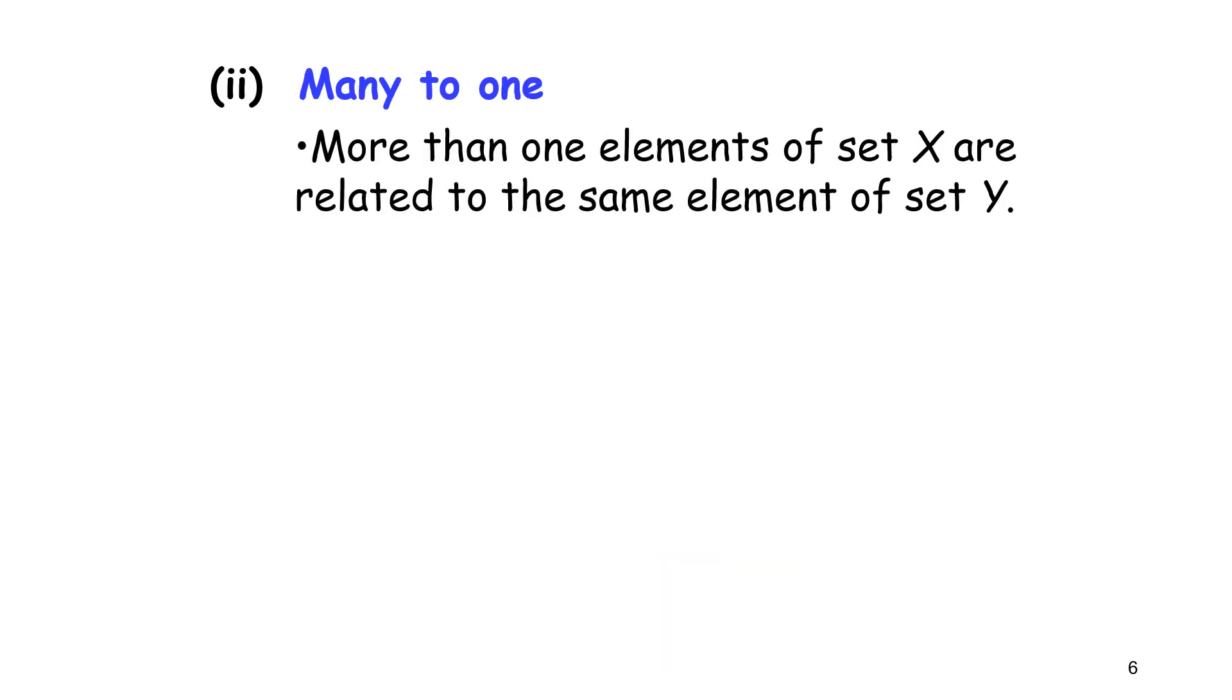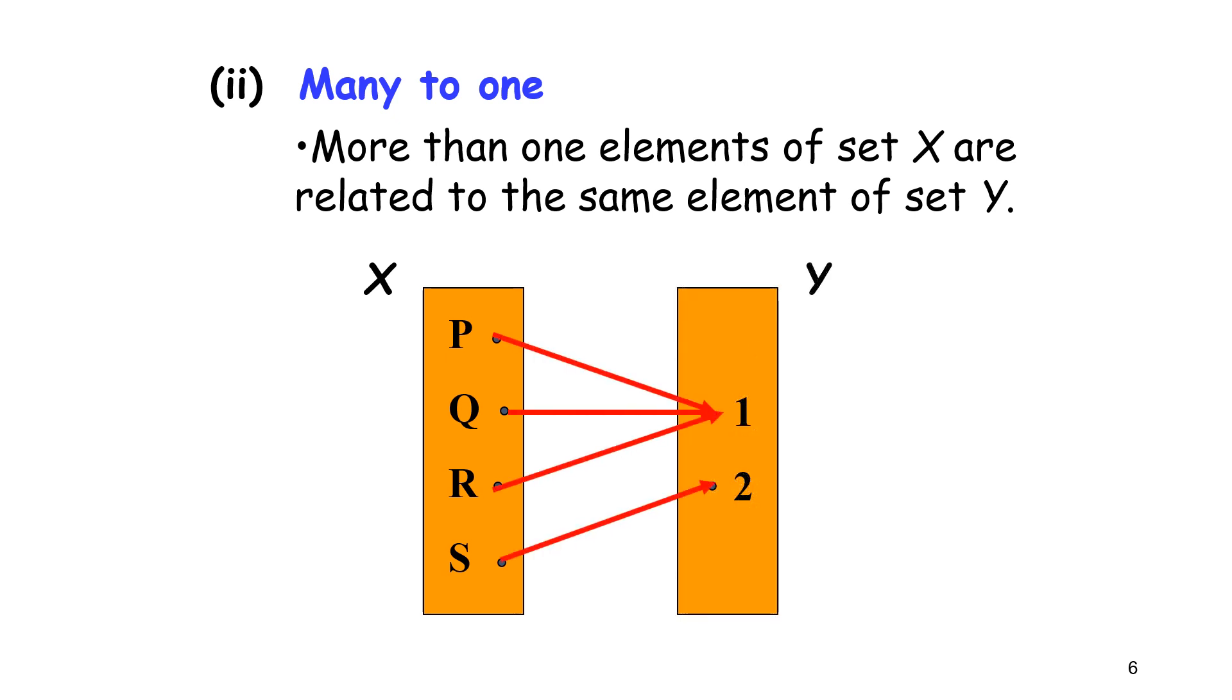Many-to-one. More than one element of set X are related to the same element of set Y. In element X, we have P, Q, R, and S. In element Y, we have 1 and 2. From the arrow, P, Q, R, S map to one and S maps to two. So we call this many-to-one.